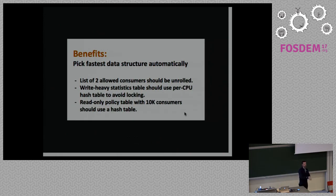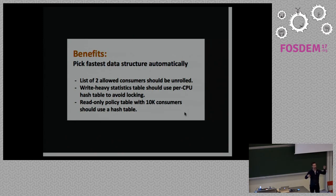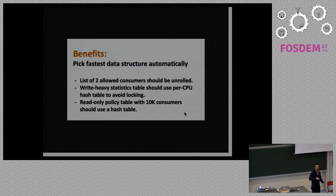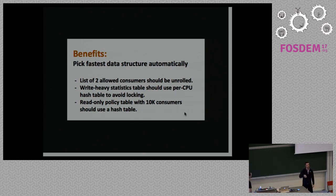We can also pick the right data structure on the fly. Data structures have a best fit depending on your specific need. If service B has a list of only two allowed consumers, it makes sense to unroll that loop and code the allowed consumers directly into the code. If you have 10,000 allowed consumers, you want a hash table. If you have a data structure collecting statistical data with frequent writes, you definitely want per-CPU hash tables. Based on these needs, we can pick the right data structure at code generation time.